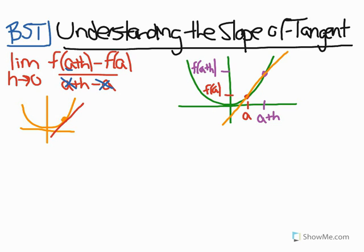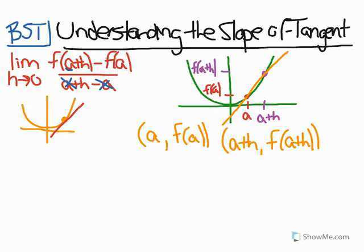And in order to find the slope of this line, I would just do f, because my two points are a, f at a, and a plus h, f at a plus h. Those are the two points that I have on this parabola.